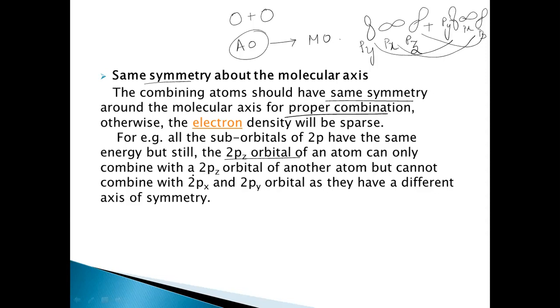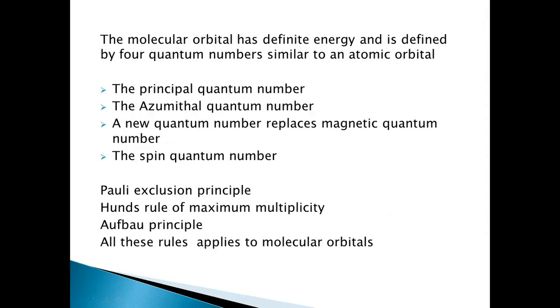The 2pz orbital of an atom can only combine with the 2pz of another atom but cannot combine with 2px or 2py orbitals, because they have different symmetry as they are oriented along different axes.